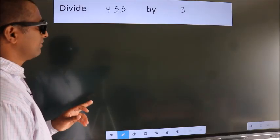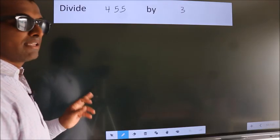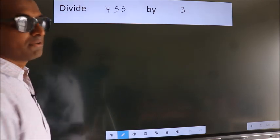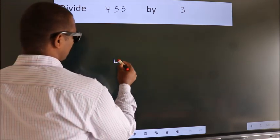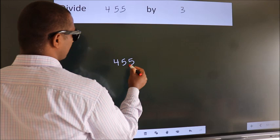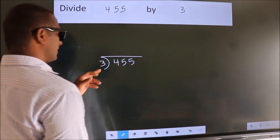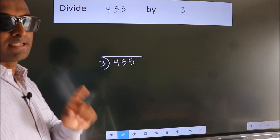Divide 455 by 3. To do this division, we should frame it in this way: 455 here, 3 here. This is your step 1.